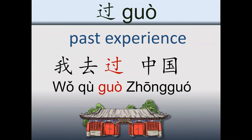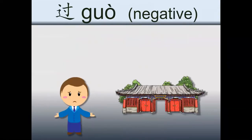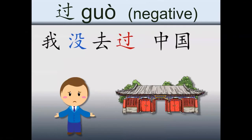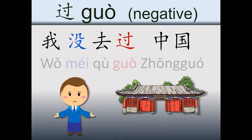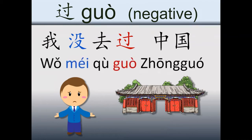How do we make the negative? We use 没, this particle, to negate the past. So, 我没去过中国 — I didn't go to China, which is the same as saying I never had the experience of going to China.